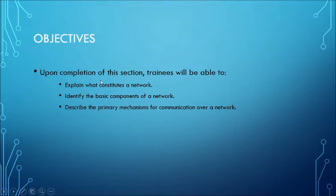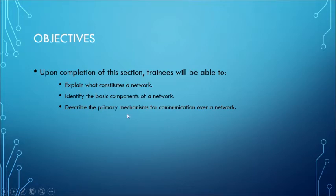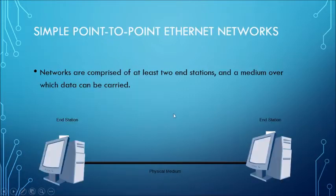In the objectives, upon completion of this session, trainees will be able to: explain what constitutes a network, identify the basic components of a network, and describe the primary mechanism for communication over a network. First we look at the simple point-to-point internet network.